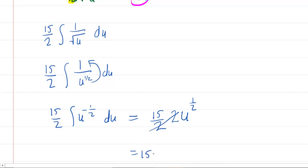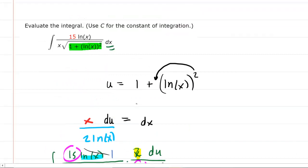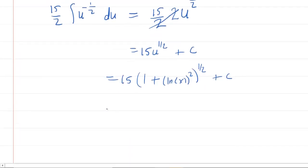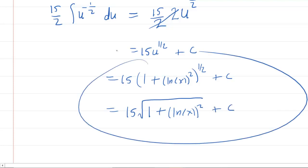We go back and remember what u equaled. It was 1 plus the natural log of x squared. So you'll have 15 times 1 plus the natural log of x squared, all raised to the power of half plus c. That's perfectly fine. For those who prefer radical notation, you can also write that as 15 times the square root of 1 plus the quantity natural log of x squared, then plus c. Either one would be correct.